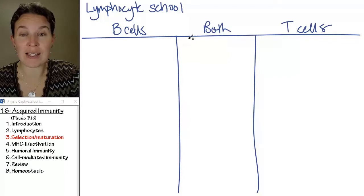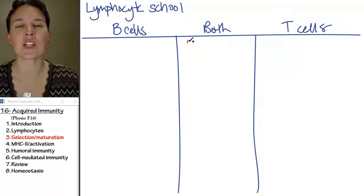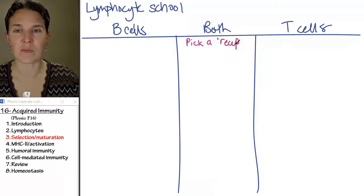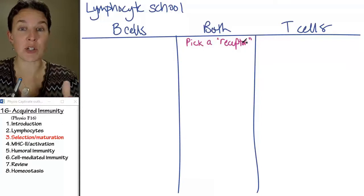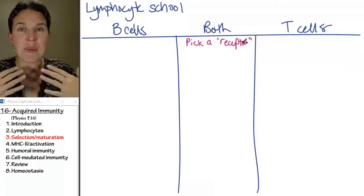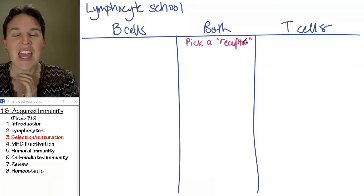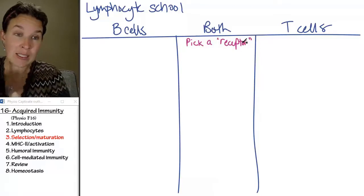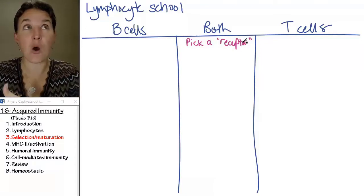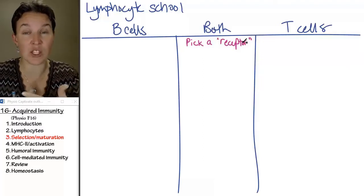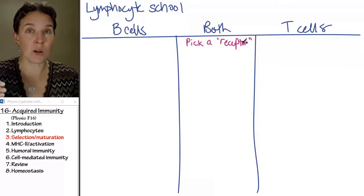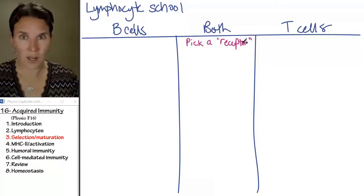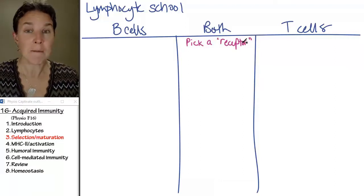But they both start out as naïve cells. The first thing that they do is pick a receptor — a T cell receptor for T cells, and an antibody for B cells. They're going to pick their specific little guy. It's insane when you think about how many different possible antibodies and receptors can be produced. Think about all the different cold viruses that you want your lymphocytes to be able to specifically respond to. It's absolutely mind-boggling.